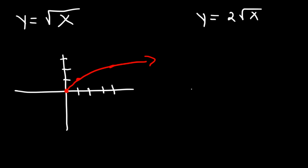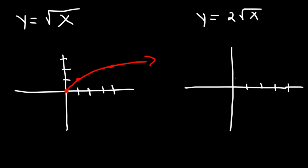Now let's see what happens if we put a 2 in front of the square root. Everything is the same, but the y values will double. The origin stays at (0, 0). Traveling 1 to the right, instead of going up 1 we go up 2. Traveling 4 units to the right, instead of going up 2 we go up 4 relative to the origin. The graph has been stretched vertically by a factor of 2.